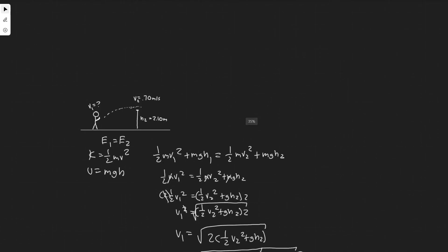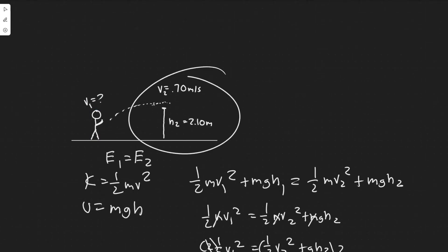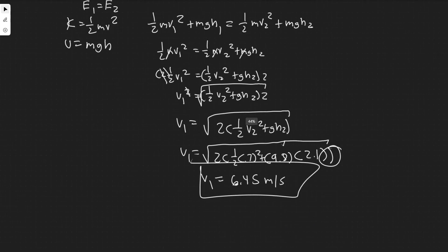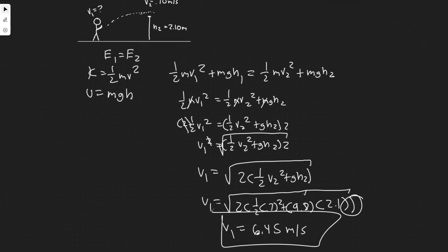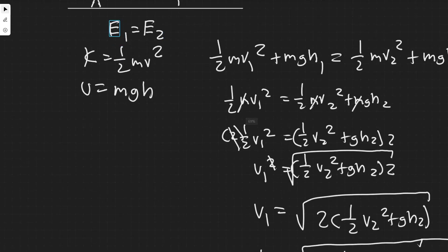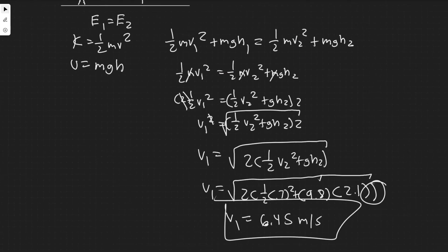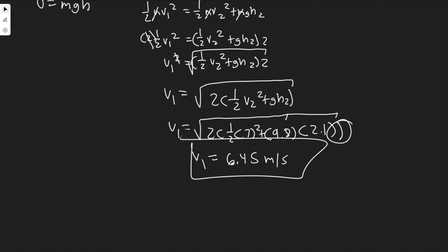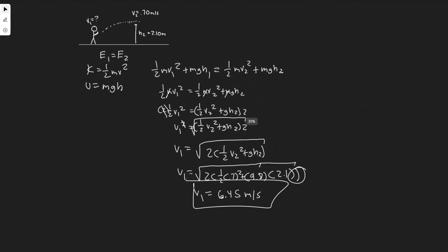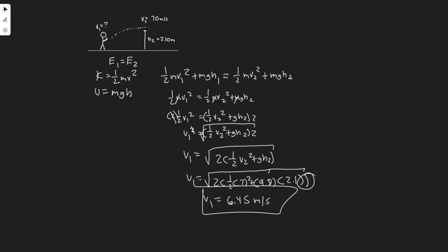6.45 meters per second. That's going to be the minimum speed which they have to jump in order to jump 2.1 meters in the air with this speed at that time. So, this is going to be your answer. And a quick summary. All we did was use the law of conservation of energy. We just set the kinetic and potential at one point equal to the other point, and then canceled out terms and plugged them in and just solved. Pretty simple problem. So, this is going to be your answer. And hopefully, you found this video helpful.